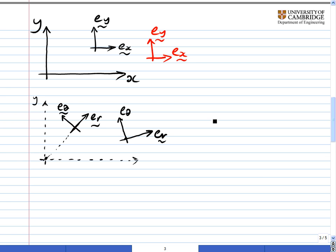What you find is that d by d theta of eR, the unit vector in the R direction, is not equal to zero, and d by d theta of e theta is not equal to zero either. Whereas in the Cartesian case, d by dx and d by dy of any of the unit vectors, ex or ey, is equal to zero.